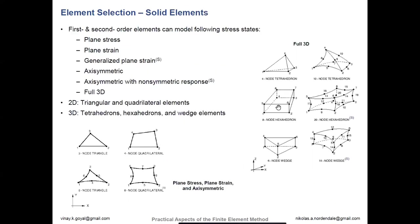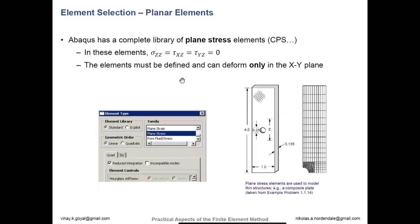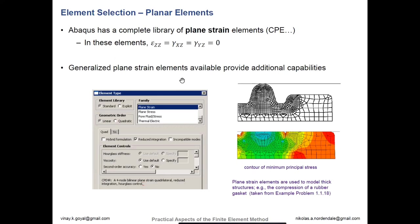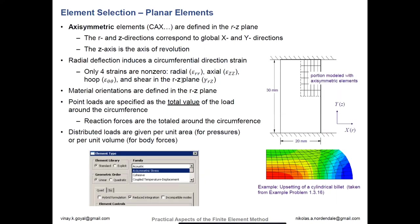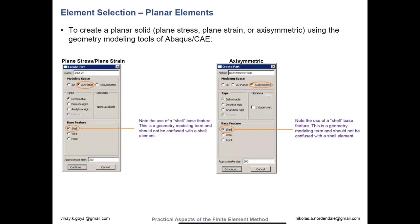First-order and second-order elements are available. You can see a hexahedron going from eight-noded to twenty-noded with midpoints on the edges. You can have other kinds of 2D models like plane stress, plane strain, and also axisymmetric — including axisymmetric with non-symmetric response. Abaqus has a complete library of plane stress elements, plane strain elements, and also planar elements. For axisymmetric elements, R is the radial direction and Z is the axis of revolution — you mesh a 2D cross-section and that gets revolved 360 degrees about the Z axis.